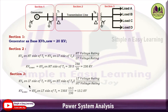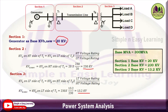For Section 3: base kV on the LT side of T2 = base kV on HT side of T2 × (LT/HT rating of T2) = 230 × (13.2/230) = 13.2 kV. So the reference base MVA is 300 MVA throughout the problem; Section 1 base kV = 20 kV; Section 2 base kV = 230 kV; Section 3 base kV = 13.2 kV.